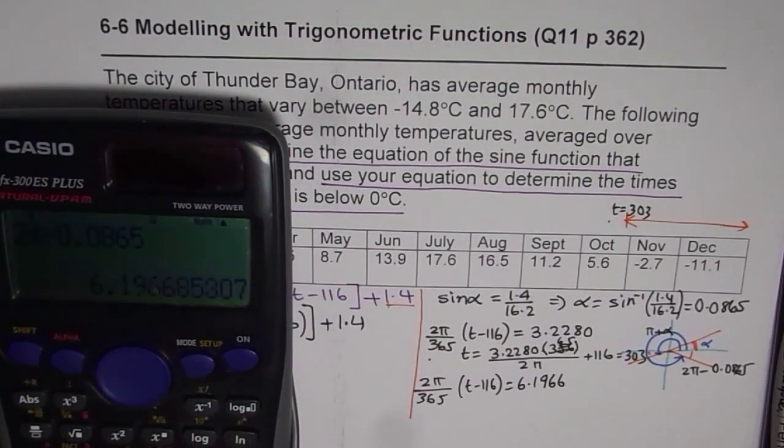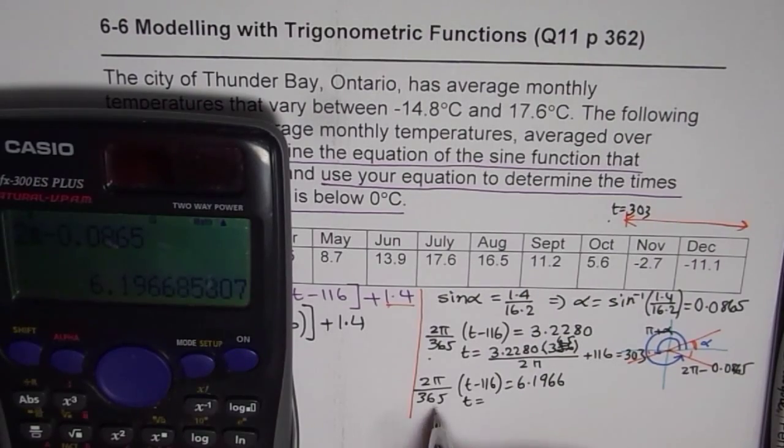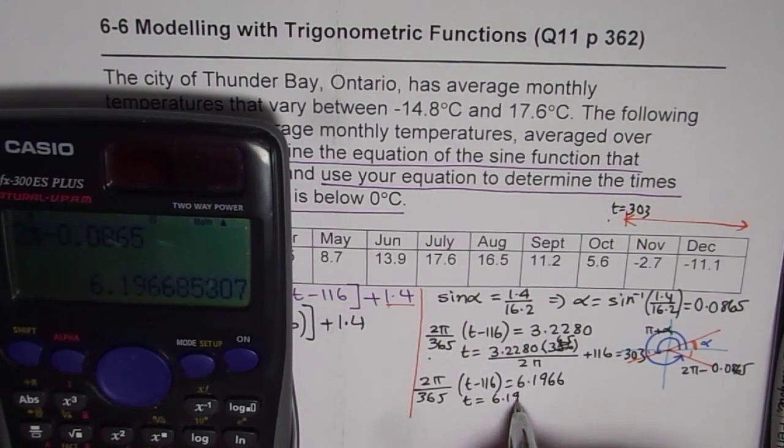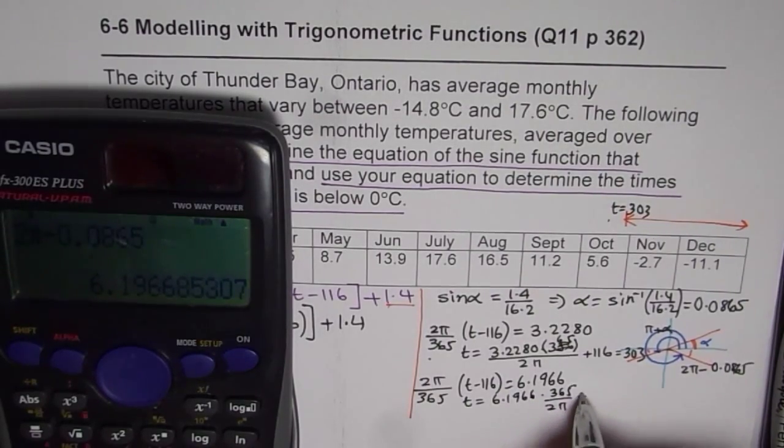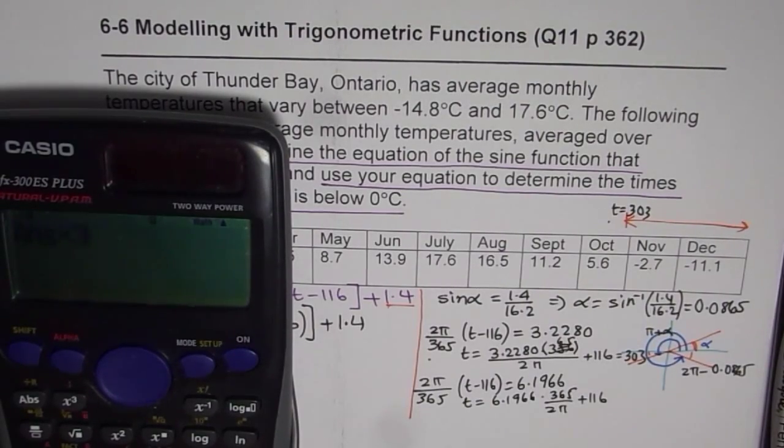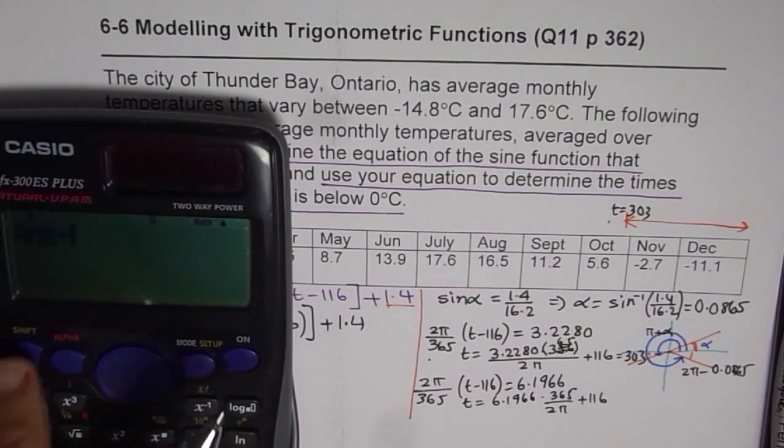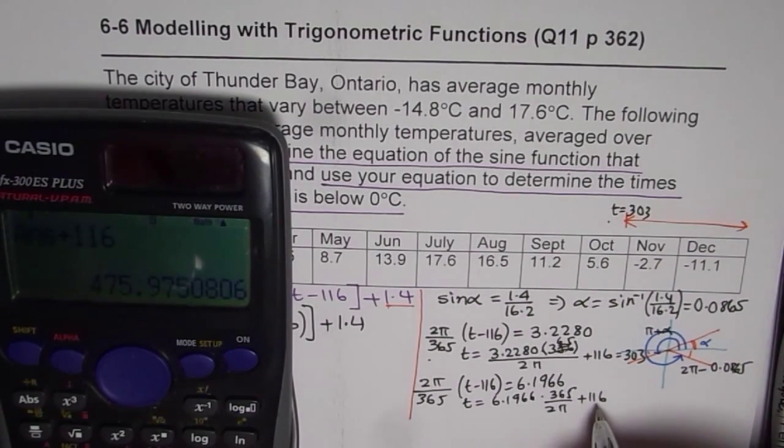we will, let me push it a bit forward. So t will be equals to, we will multiply this by 6.1966 times 365 divided by 2 pi and then add 116, what you get is 475.97.